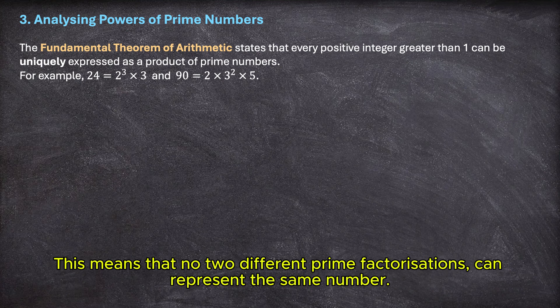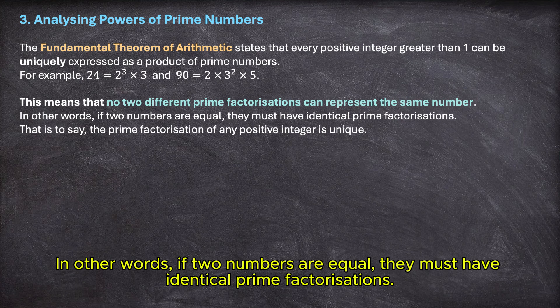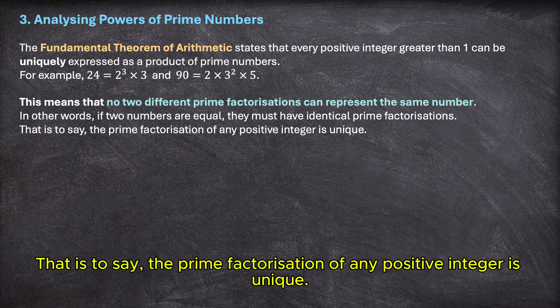This means that no two different prime factorizations can represent the same number. In other words, if two numbers are equal, they must have identical prime factorizations. That is to say, the prime factorization of any positive integer is unique.